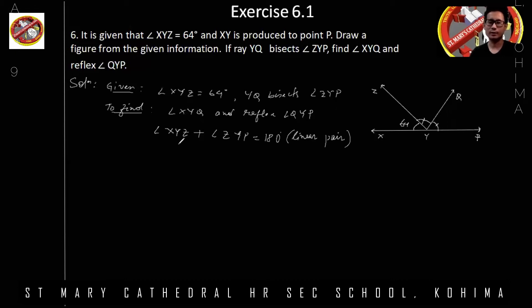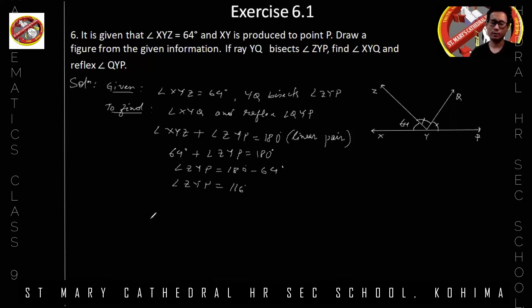Angle XYZ is 64 degrees, angle ZYP is equal to 180 degrees. And angle ZYP, if I transpose 64 degrees to the right side, it becomes minus. So 180 minus 64. So here angle ZYP is equal to 180 minus 64 is 116 degrees.